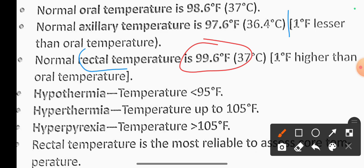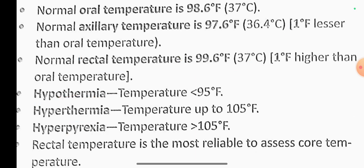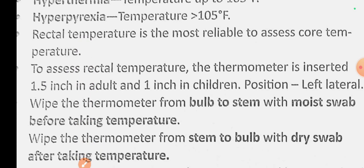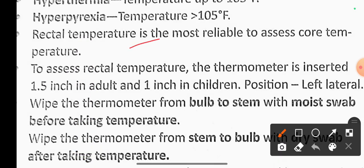Hypothermia is a temperature drop of 95 degrees Fahrenheit or below. Hyperthermia is an elevated body temperature. Rectal temperature is the most reliable method to assess core body temperature.